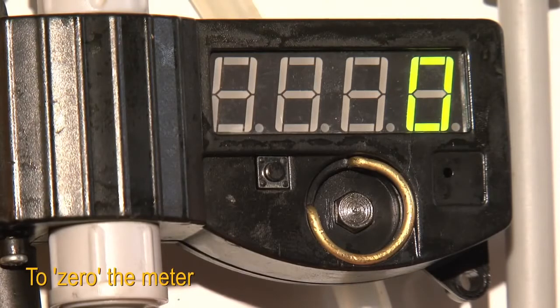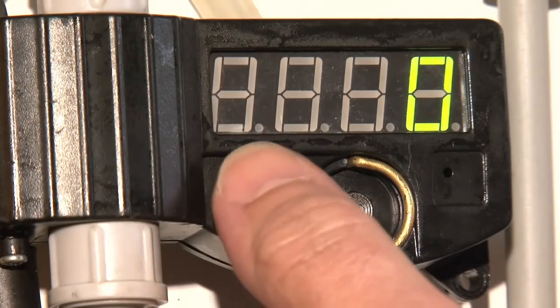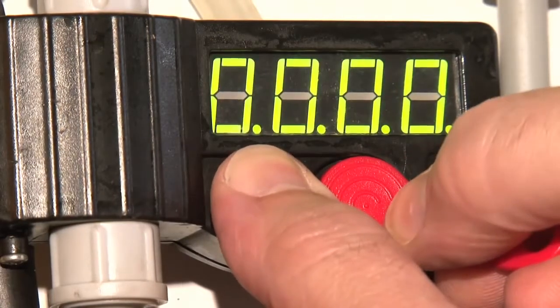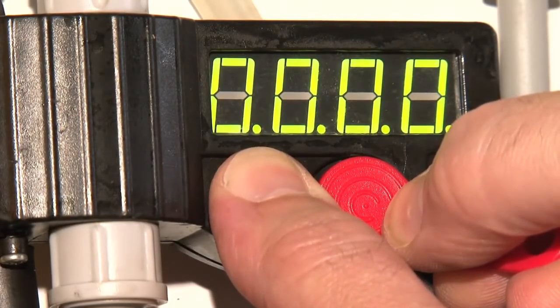To zero the meter, press the small button underneath the display and touch the meter with the meter key. The meter will then show four zeros.